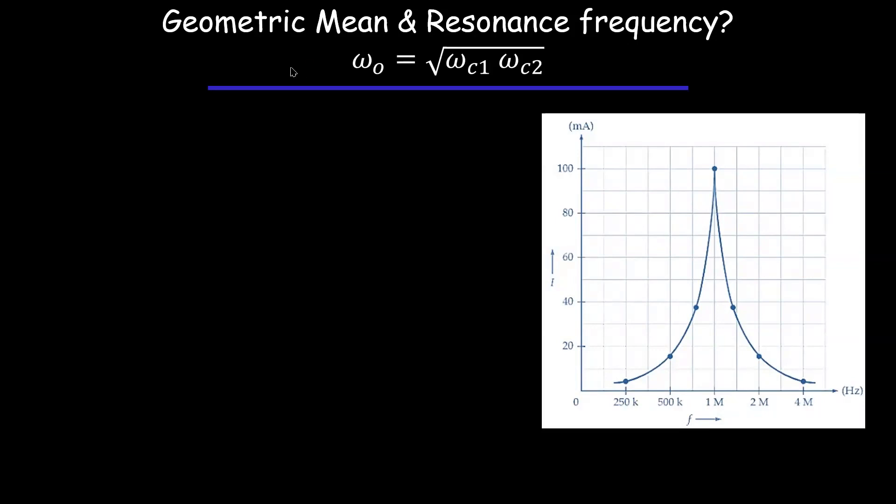So we learned that omega nodes, the resonance frequency, is basically the square root of, or the geometric mean of the cutoff frequencies of, for example, a band pass filter. Like WC1 multiplied by WC2 under the square root. But why is that?